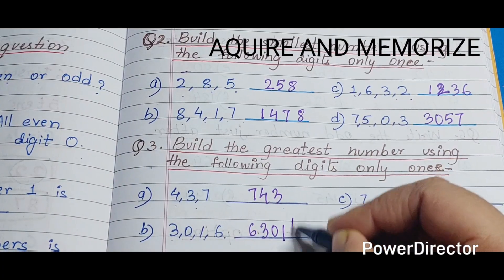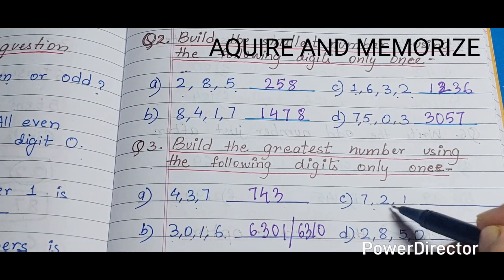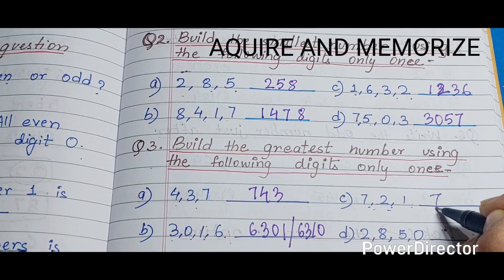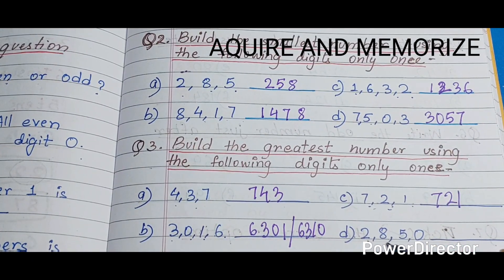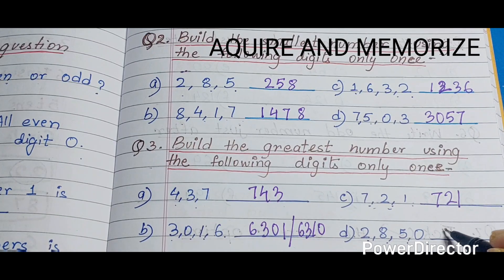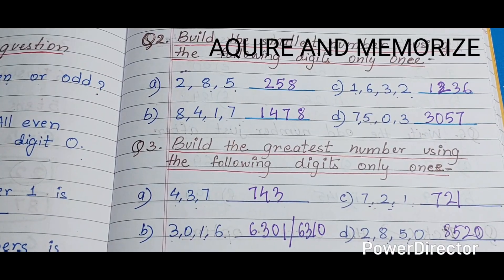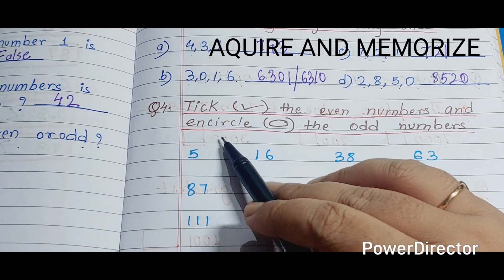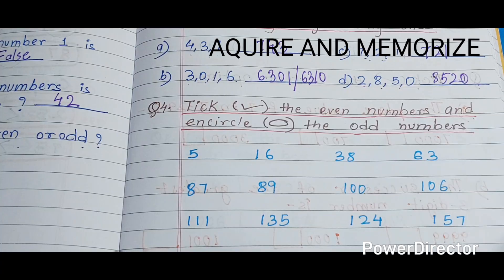With digits 7, 2, 1 the greatest number is 721. With digits 2, 8, 5, 0 the greatest number is 8520. Next section: tick the even numbers and circle the odd numbers.